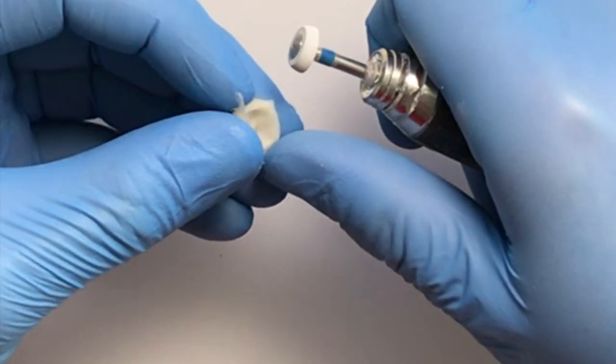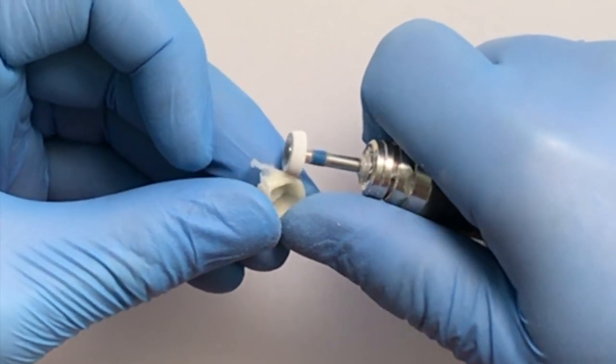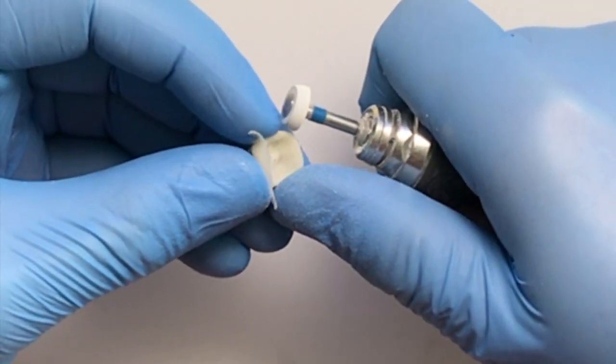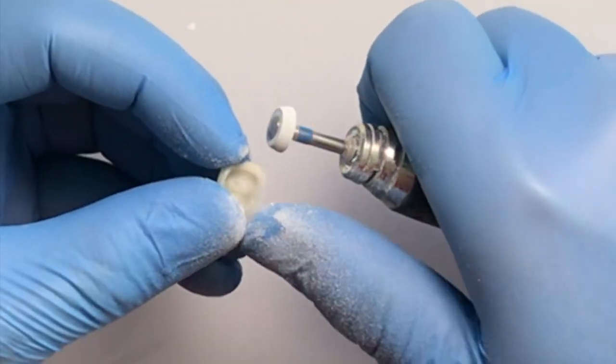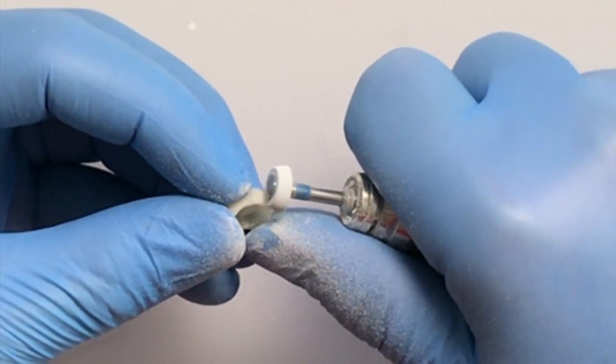Once you've done that, again, take that wheel in a mandrel and polish away. I like to polish close up to where the margin is visible, blending that end of the surface of the tooth very nicely. It keeps everything very smooth and cleansable.